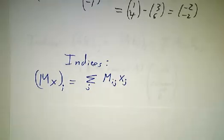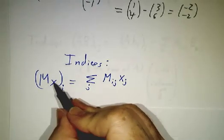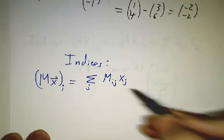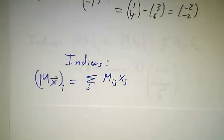In terms of indices, if you want the i-th entry of mx, that's just going to be the sum of mij, xj. And you can derive that either from the row perspective or from the column perspective.